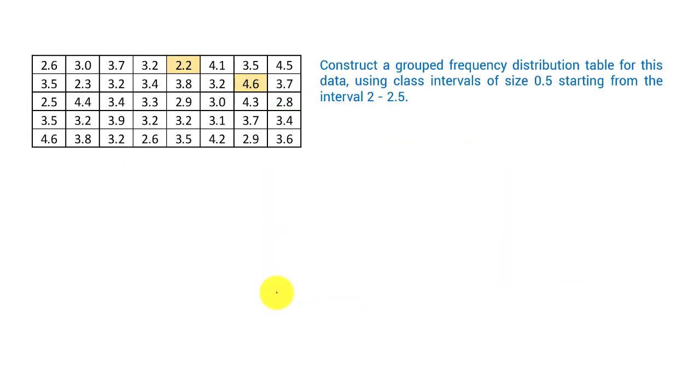Now we will see how it will be. First of all, we will list out the battery life in a table. We will mark the minimum and maximum life, which is 2.2 and 4.6.